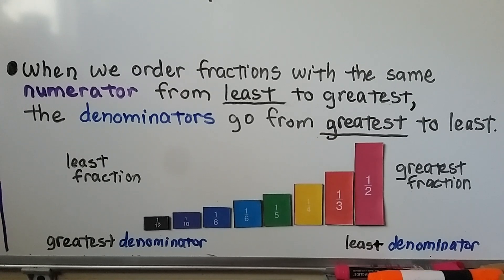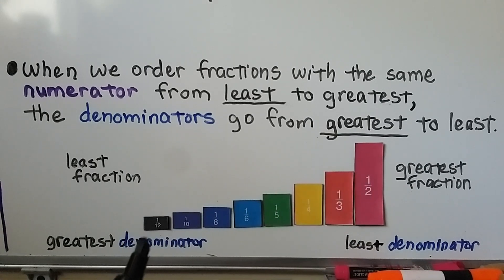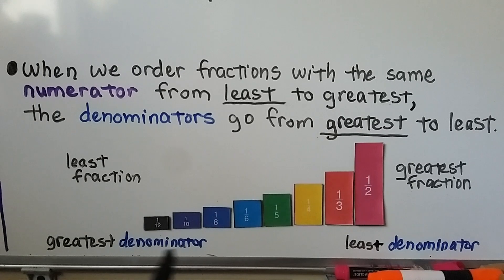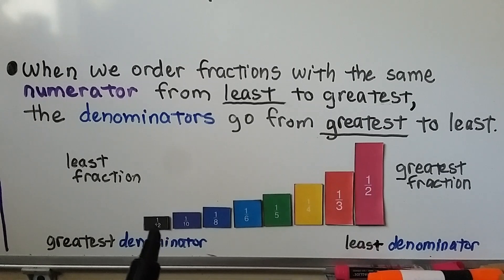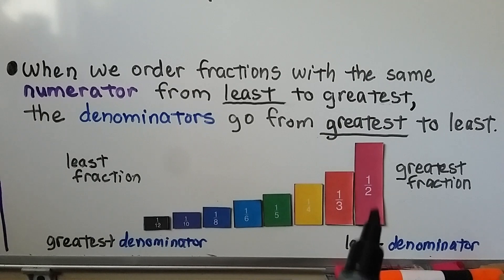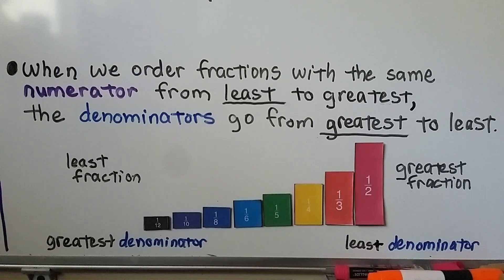When we order fractions with the same numerator from least to greatest, the denominators go from greatest to least. Here the numerators are all one, and we want to go from least to greatest. So the denominators go from the biggest number — the greatest denominator is the least fraction — all the way down to the least denominator: twelve, ten, eight, six, five, four, three, two. See how the denominators got smaller but the fraction got bigger, because the pieces were bigger — the whole was split into fewer parts.